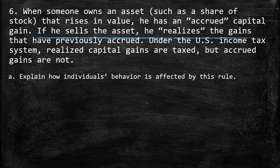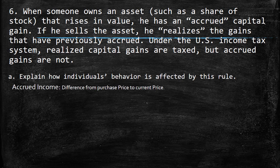The question proposes: explain how individuals' behavior is affected by this rule. Basically, we need first to understand these two concepts. The first one is accrued income — it is basically the difference from purchase price to current price. But you don't sell this stock or asset, so this gain is not realized.